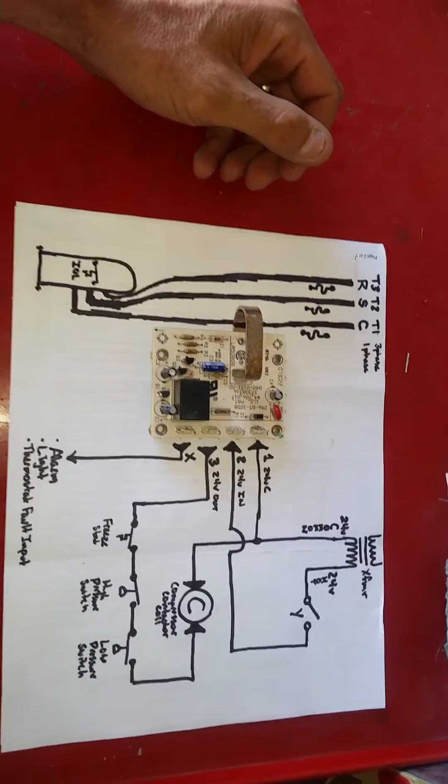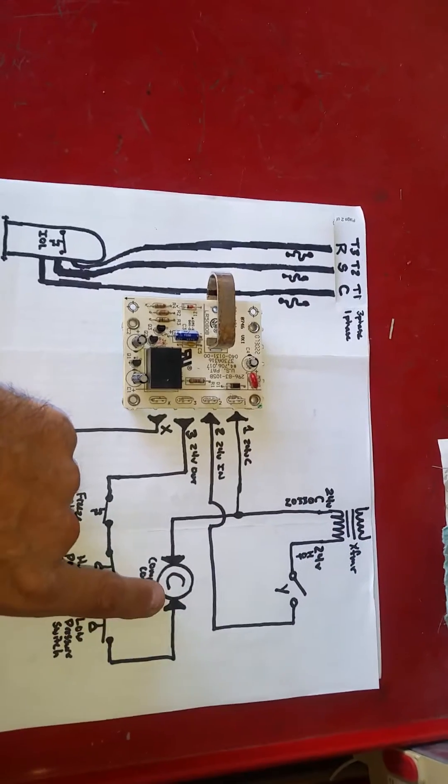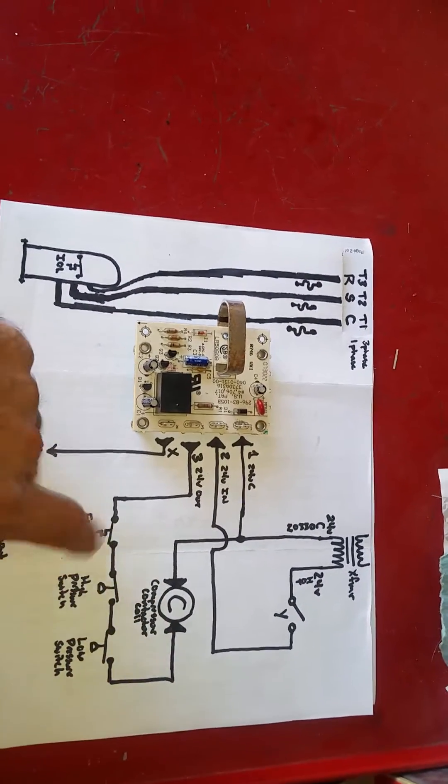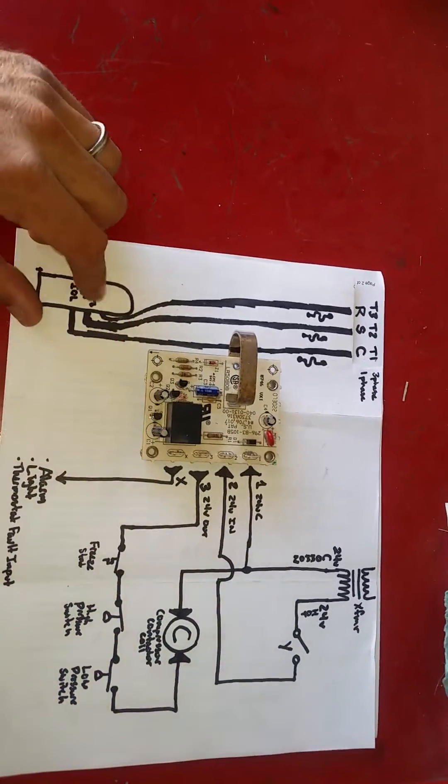First of all, in most of the circuits you're going to see, we'll have a transformer, we're going to have a compressor contactor, we're going to have some safeties in series, which is usually what they do with Carrier, and a compressor.